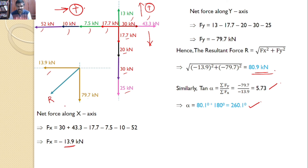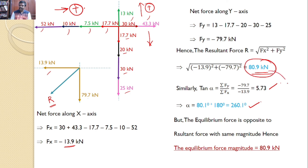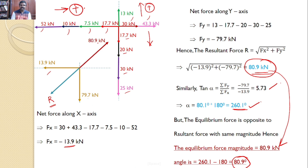My interest is to find the equilibrium force. The equilibrium force is always opposite to the resultant force but has the same magnitude. Hence the equilibrium force is also 80.9 kN. The direction is opposite, so 260.1° minus 180° gives 80.1°. Hence the equilibrium force is 80.9 kN at an angle of 80.1°.